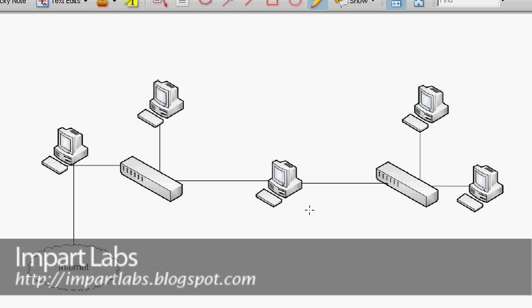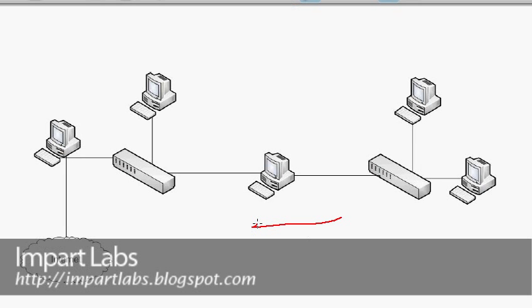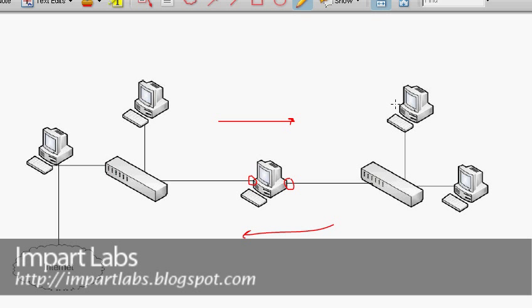We're going to forward packets from this network to this network and back. Layer 2 bridges require the network cards connected to them to support promiscuous mode. When a computer receives a packet headed for another computer, it looks at the packet — if it's designated for itself, it accepts it, processes it, and sends it to the upper layers of the OSI model until it reaches the destination software.